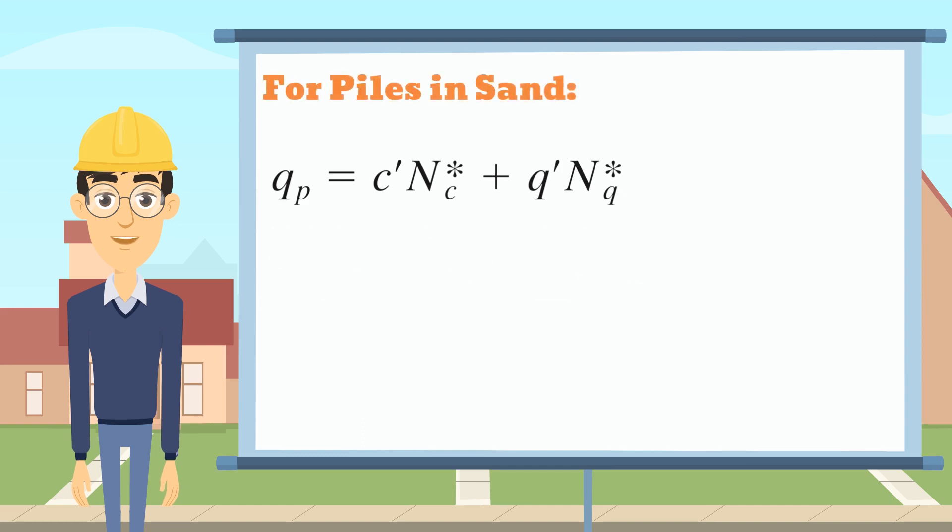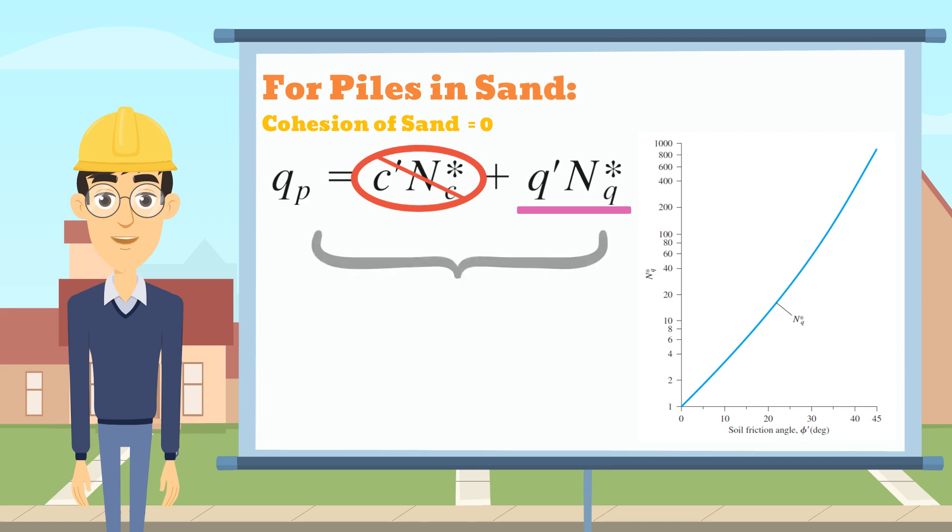Therefore, for the pile in sand, the cohesion is zero. We only need to calculate this part. The variation of Nq with the soil friction angle is shown in this table. By multiplying them, we can get the load carrying capacity of the pile.